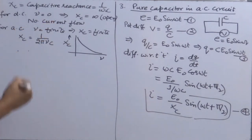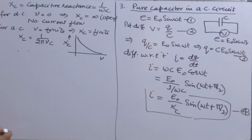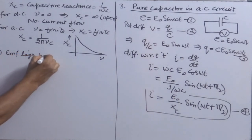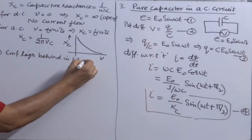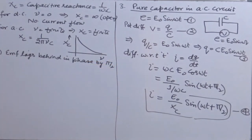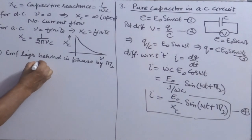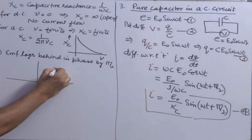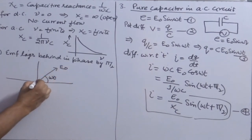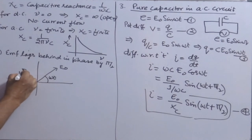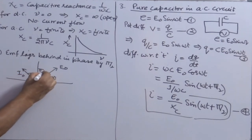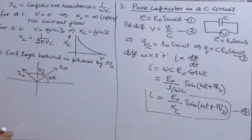Looking at the phase difference for the capacitor: the argument of current is ωt + π/2 while EMF argument is ωt, so current leads EMF by π/2, meaning EMF lags behind current by π/2. In the phasor diagram, E₀ is at angle ωt and I₀ is drawn anticlockwise by π/2 from E₀. That covers how all three different types of elements behave in an AC circuit.